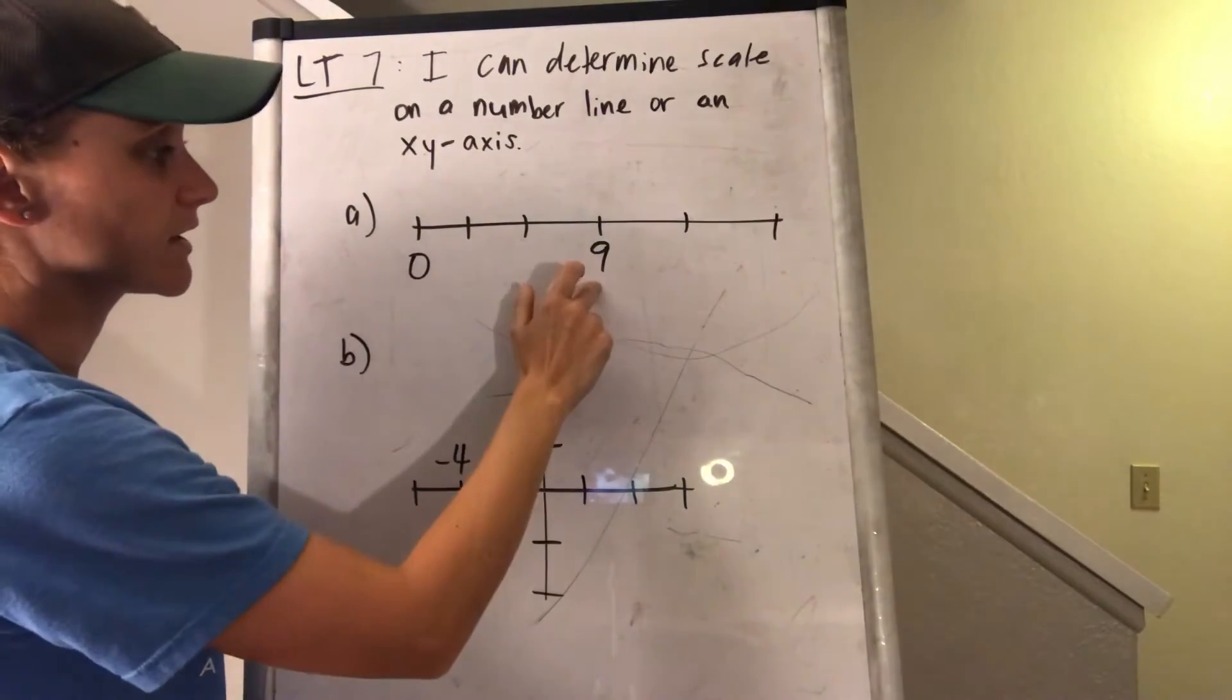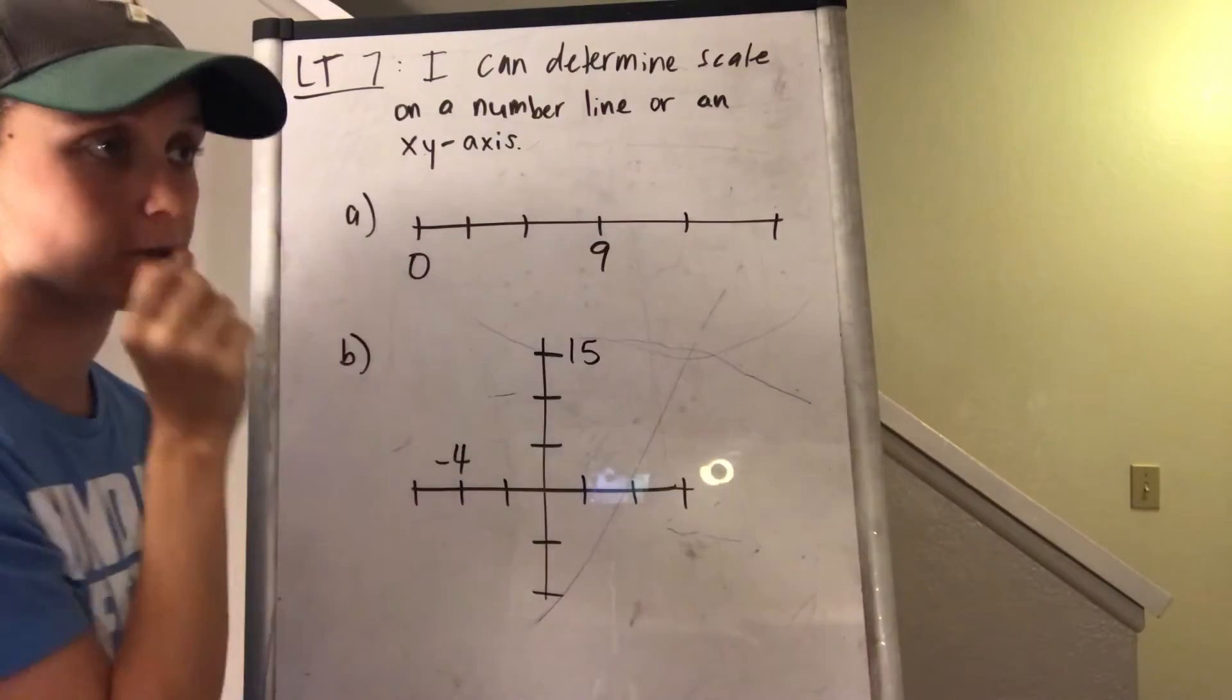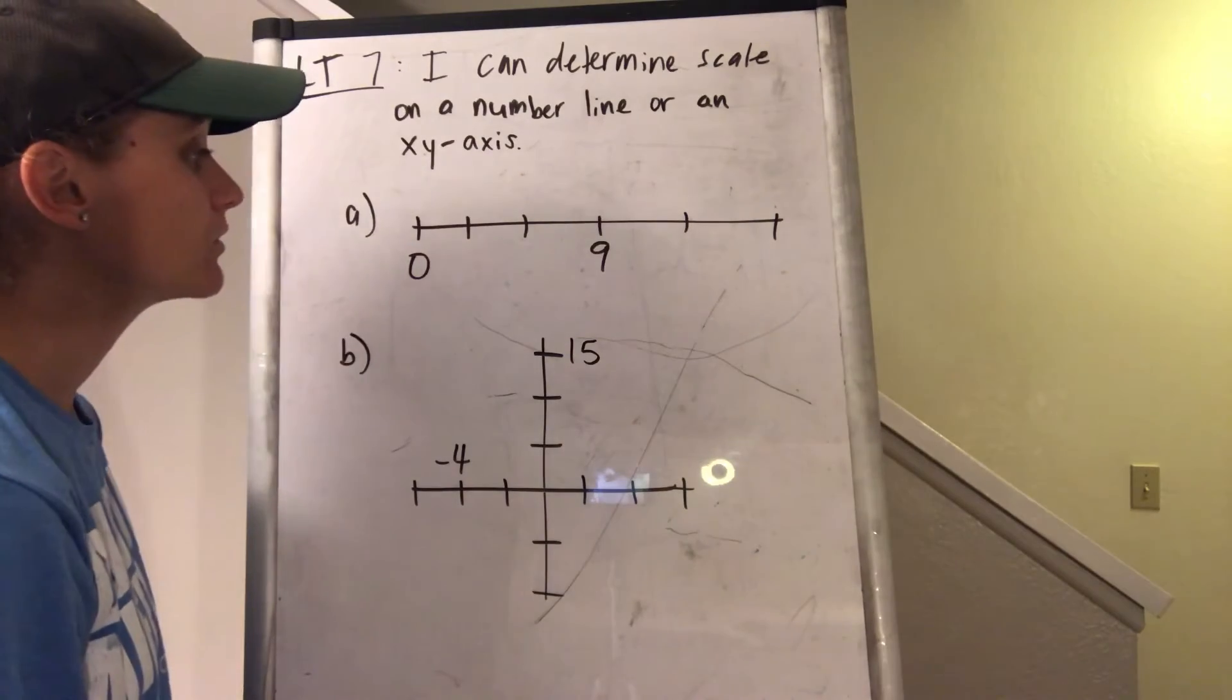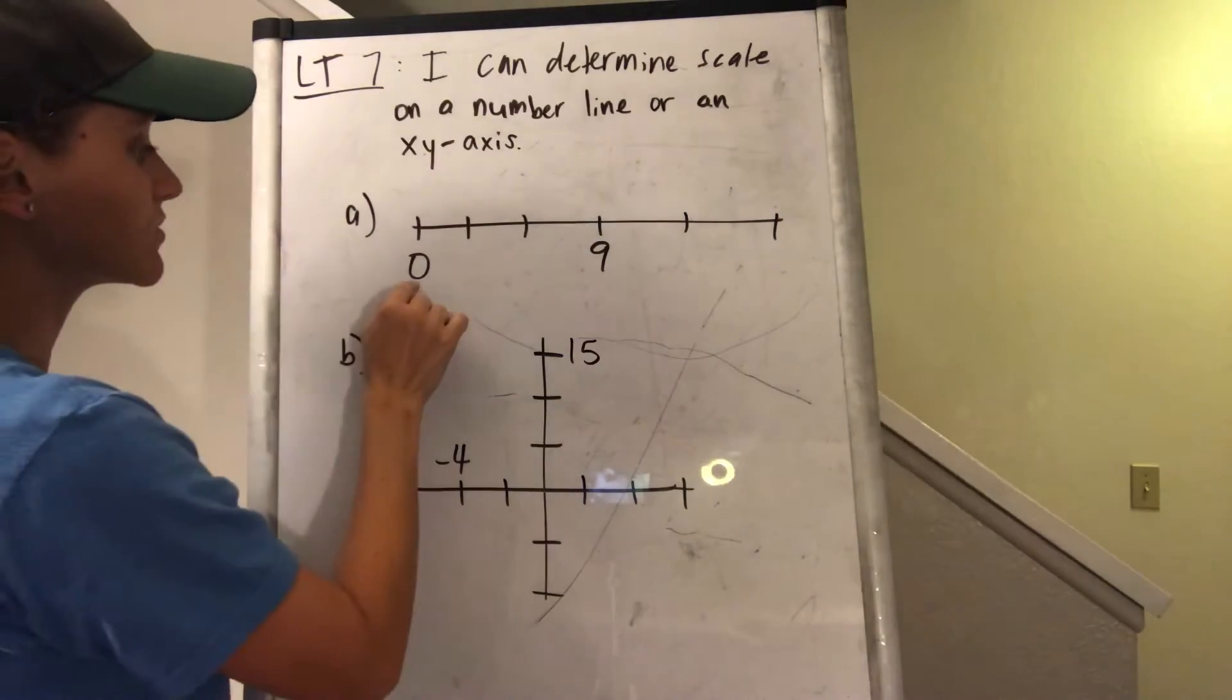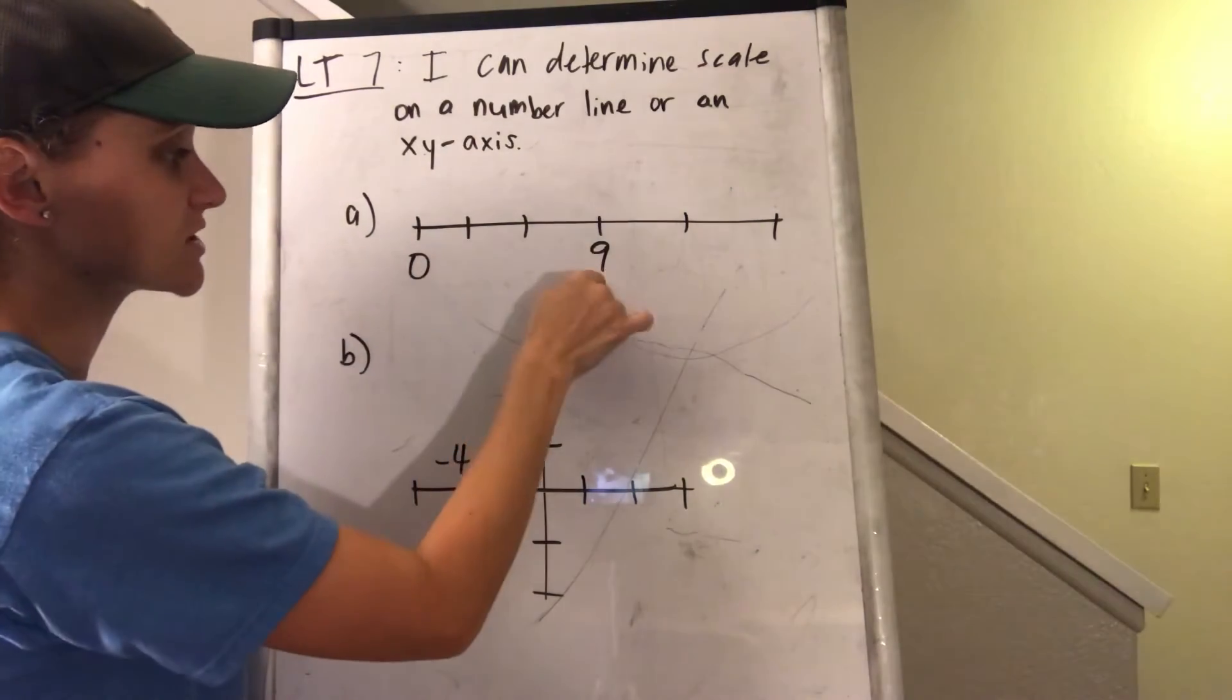So I know that I have 0 and 9 here, but I'm not sure what numbers go here. You could do a guess and check if you wanted. So what if I thought it went by 2? So 0, 2, 4, 6, well that doesn't work.